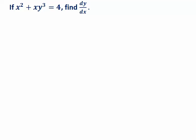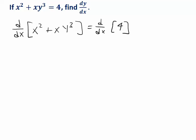As usual, we start by taking the derivative with respect to the variable x on both sides of the equation, and the first term x squared is easy to differentiate. The derivative is 2x.